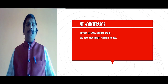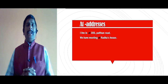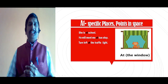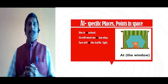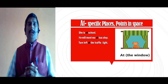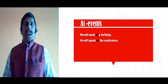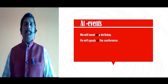Then, the 'at' preposition. 'At' is used for addresses. For example: I live at 305 Python Road. We have a meeting at Radha's house. 'At' is used with specific places and points in space. For example: she is at school. He will meet me at the bus stop. Turn left at the traffic light. 'At' is also used with events. For example: we will meet at a birthday. He will speak at the conference.